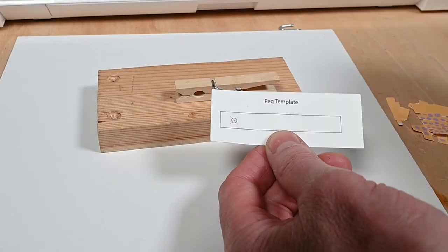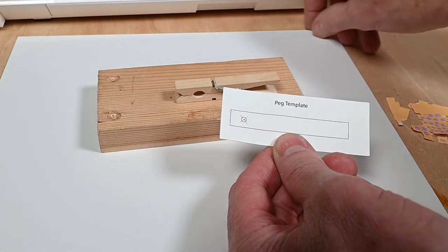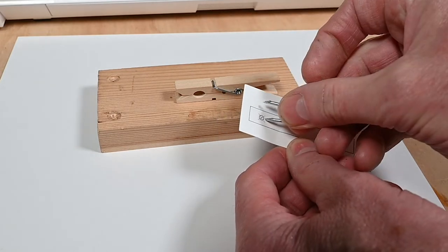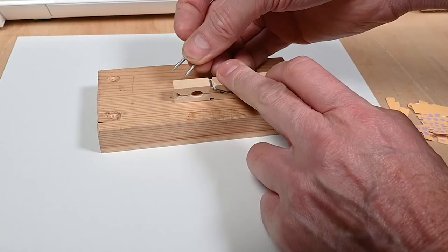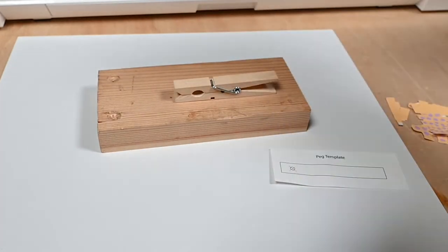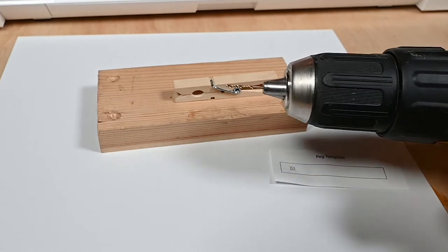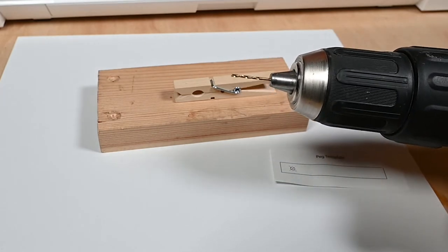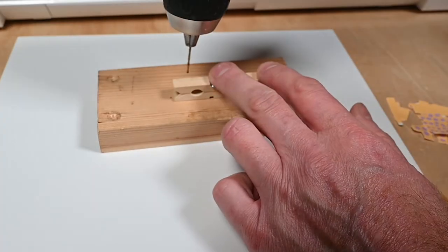I've used this template here. And there's a centre line there. So I've marked that. That's the centre hole there. I've transferred that onto the peg there. That gives me a place to drill. I've got a very small drill to start us off. This is a 2mm drill. So I'm just going to drill a hole.